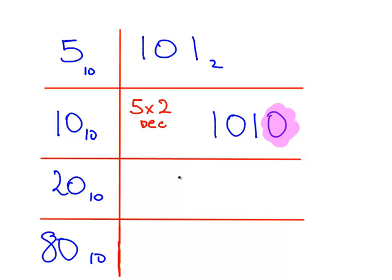Multiply 10 by 2, or 1010 by 2, and you just get there 10100. So in decimal, that is 20. In binary, we would write that as 10100.